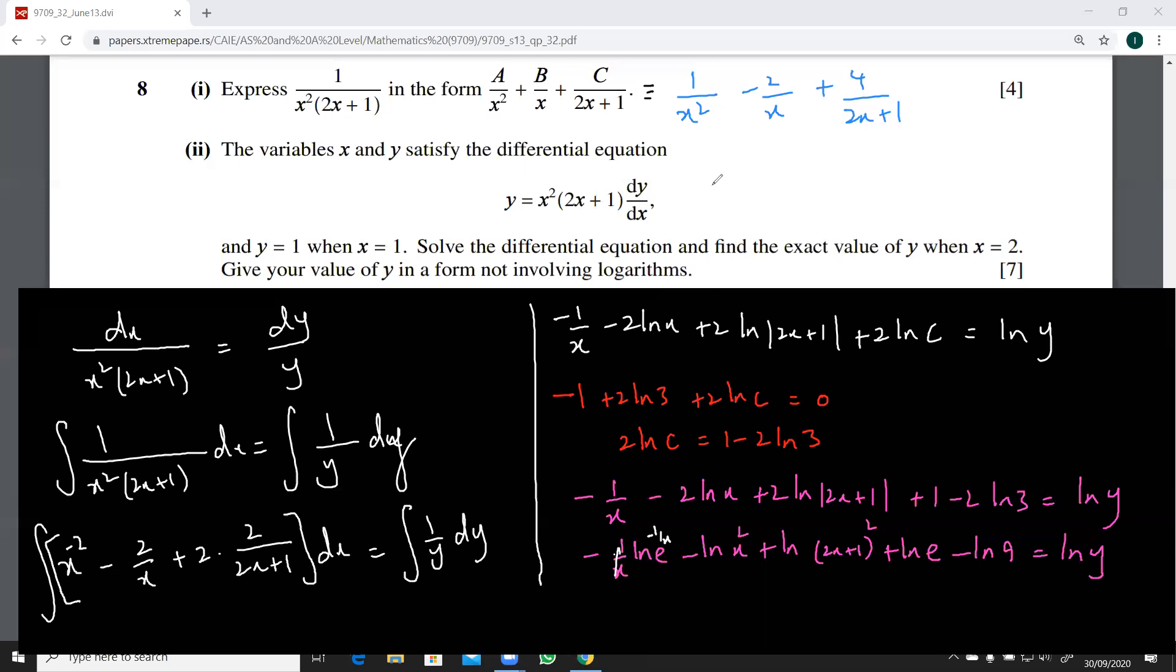I am writing it here. ln... The ones which are positive, these two are positive. So I'll write it as e into 2x plus 1 whole squared. The rest will go in the denominator. This is going to be e raised to the power 1 over x, I have x squared, and I have 9 here.